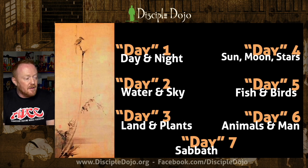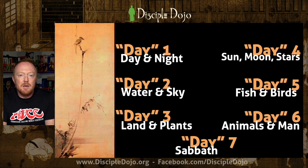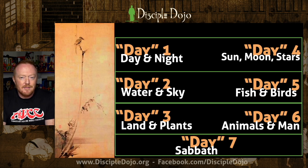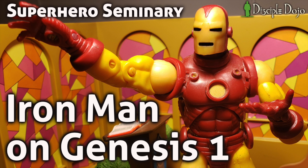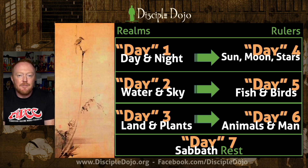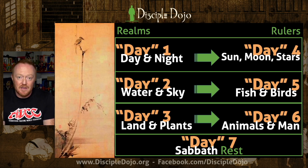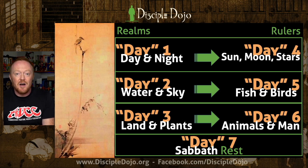Now we have all of the creation week — the first creation account in Genesis chapter one. You should see a pattern. Things should start to make more sense the more you look at this. You see the correspondence? On the left-hand side, the first three days: God is bringing into being, ordering, separating, organizing the realms — the domains. Then on days four, five, and six, God is putting into place, installing, appointing, establishing the rulers of each of those realms — the ones that will have dominion over each of those domains.